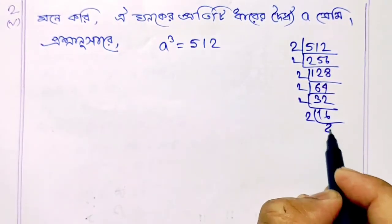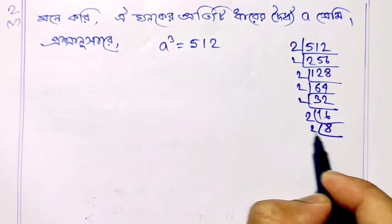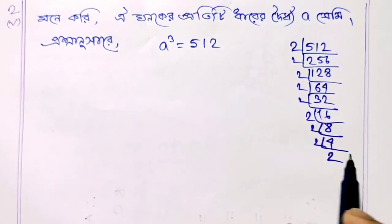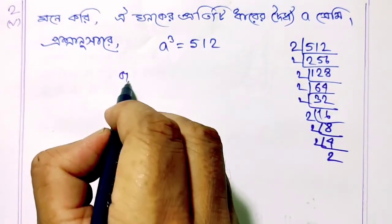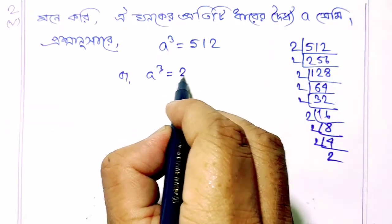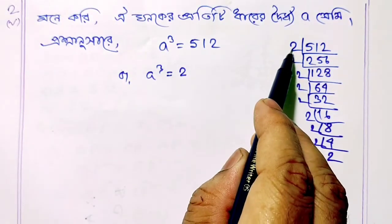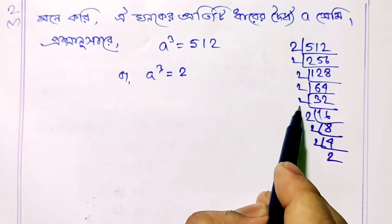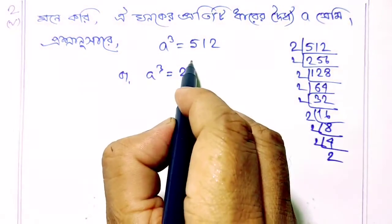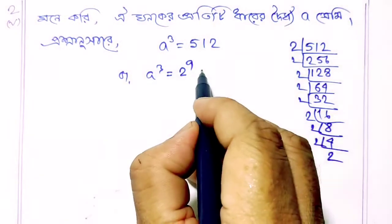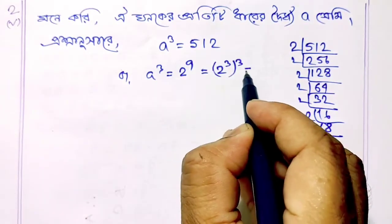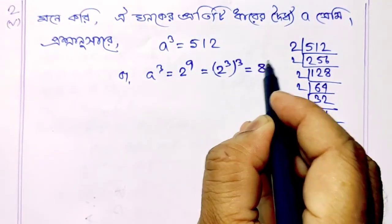2 to the power 8, 2 to the power 4, 2 to the power 2, 2. A cube equals 2 to the power 1, 2, 3, 4, 5, 6, 7, 8, 9. Equal to 2 to the power 3, whole to the power 3, equal 8 cubed.